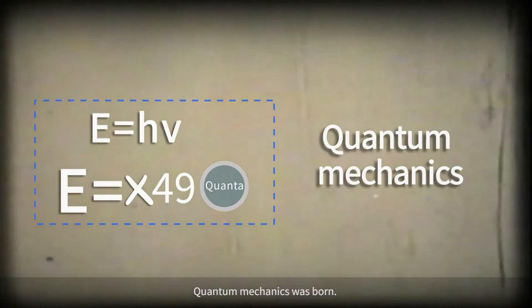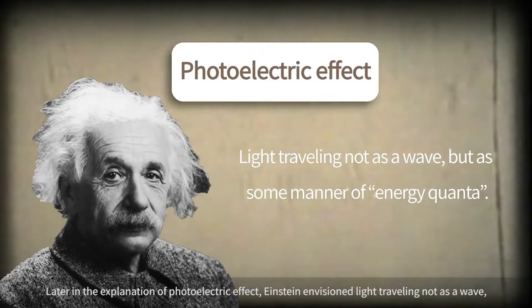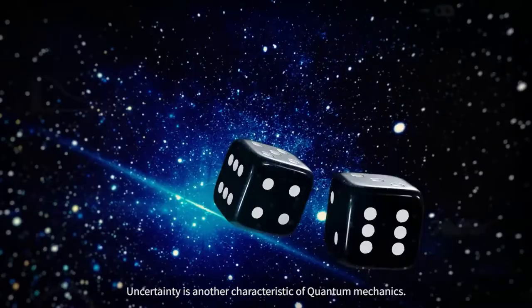Later, in the explanation of the photoelectric effect, Einstein envisioned light traveling not as a wave but as some manner of energy quanta. Uncertainty is another characteristic of quantum mechanics.